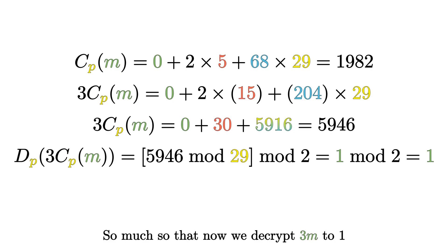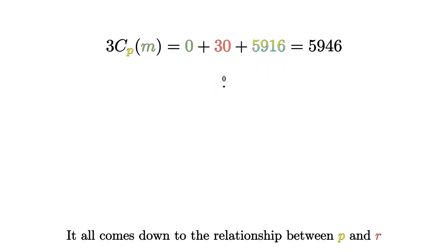We start with 2946 mod 29, which is equal to 1, and then we check whether the result is even or odd. 1 is odd, so we conclude that 3 times m is equal to 1. But of course, we know that that is not the case, since m is equal to 0. So what went wrong?